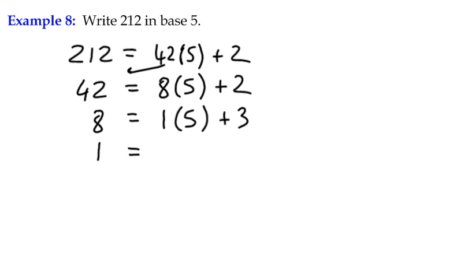Move the 1 over. We're dividing by 5. And 5 divides into 1 zero times, remainder 1. And we stop there because of the 0.